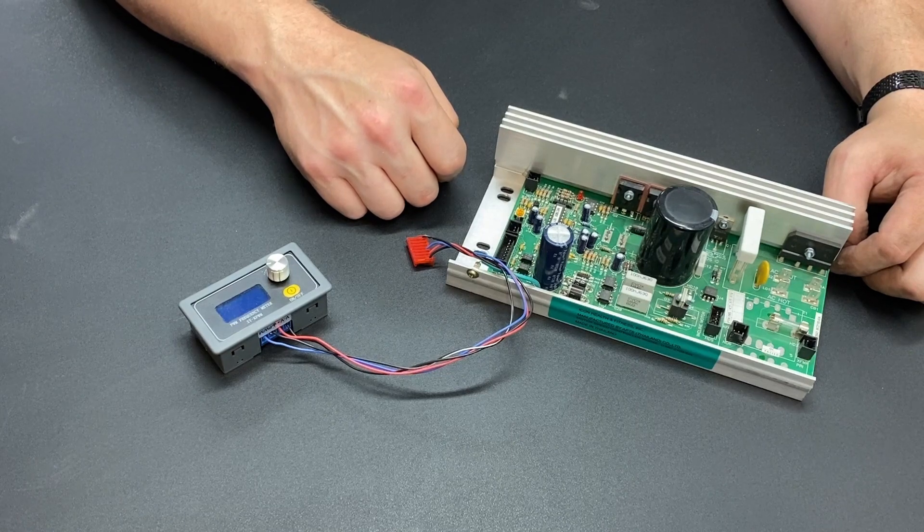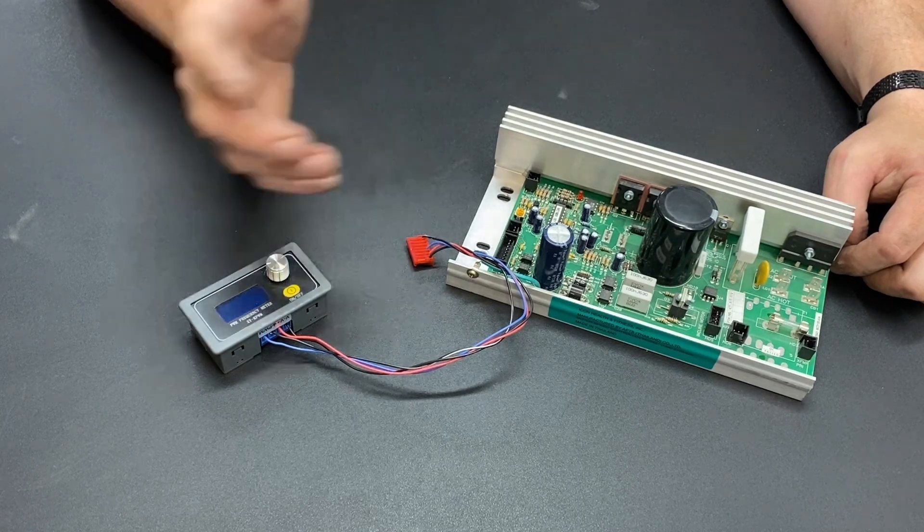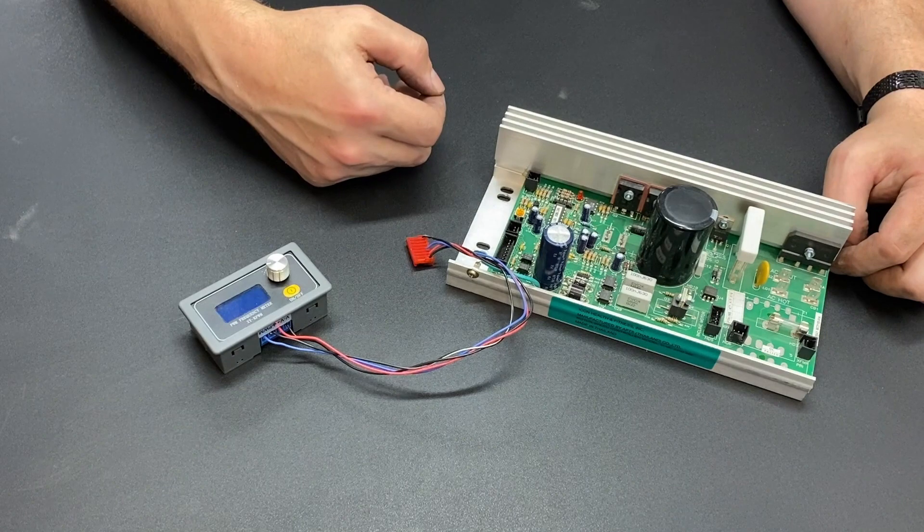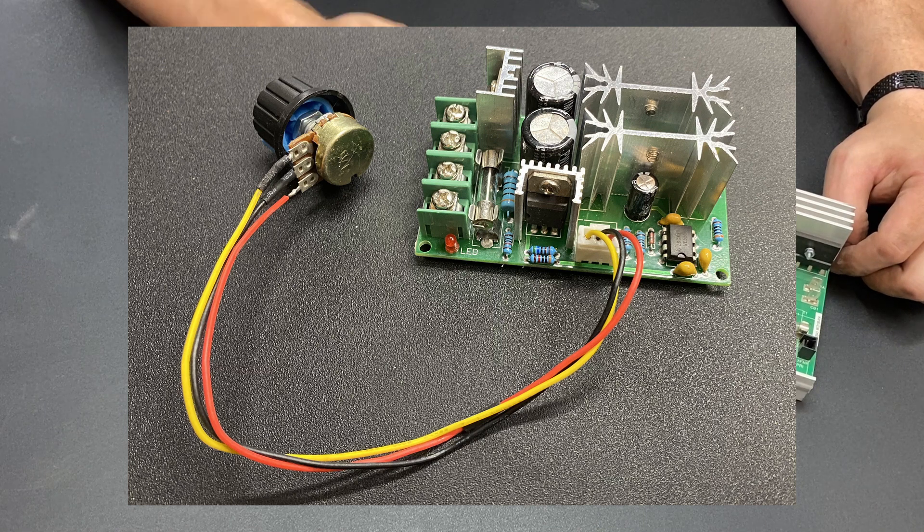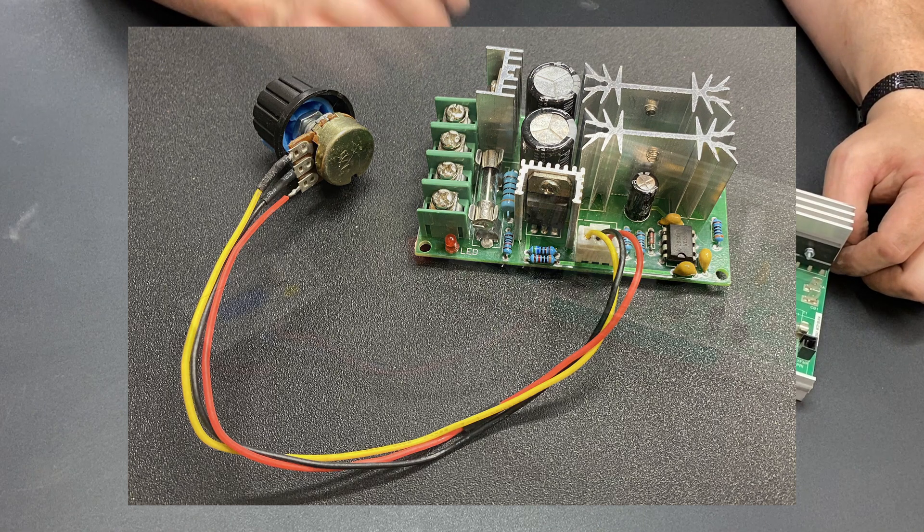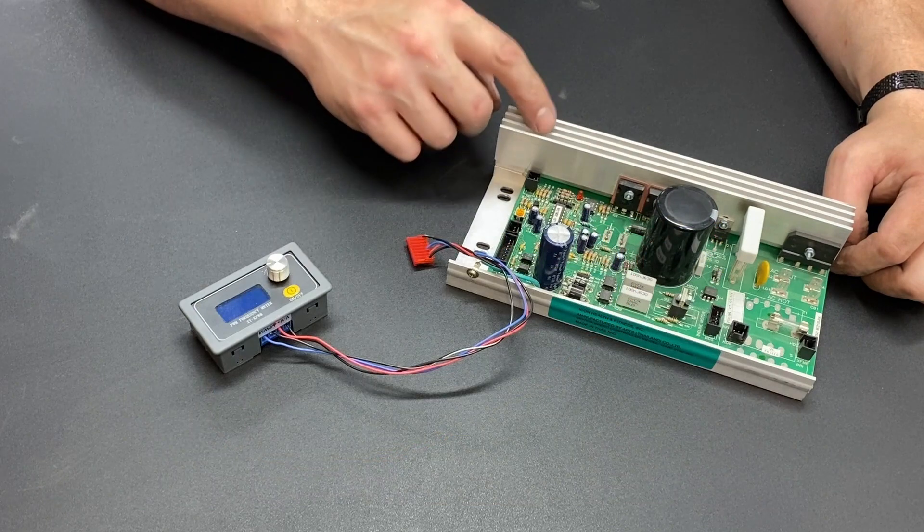Now there are other Pulse Width Modulators out there. You can find them on eBay, you can find them on Amazon, and the way they work is you put DC current in, and it will pulse on and off, just like this does right here.